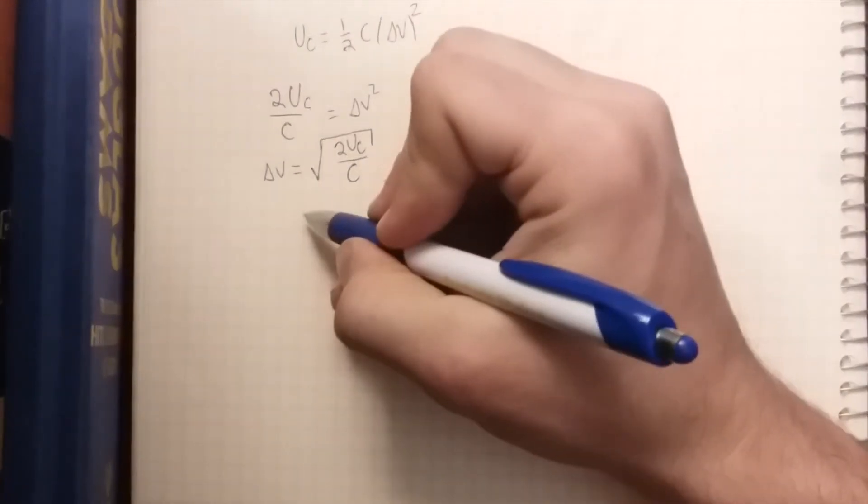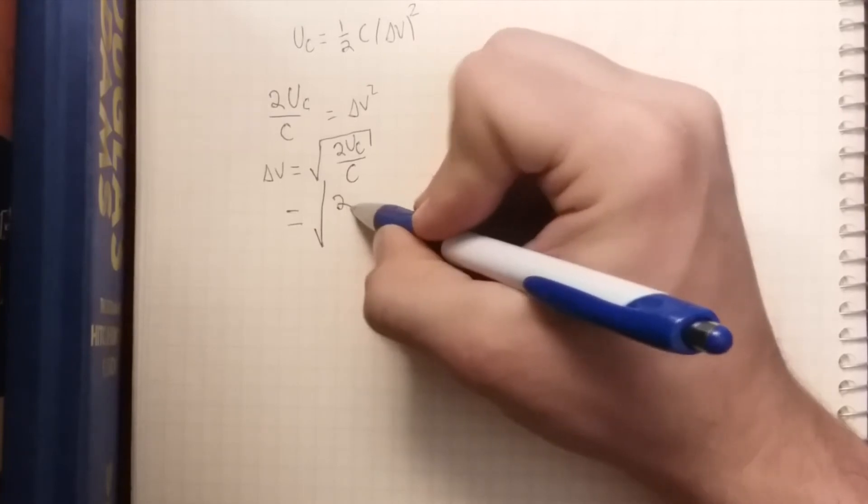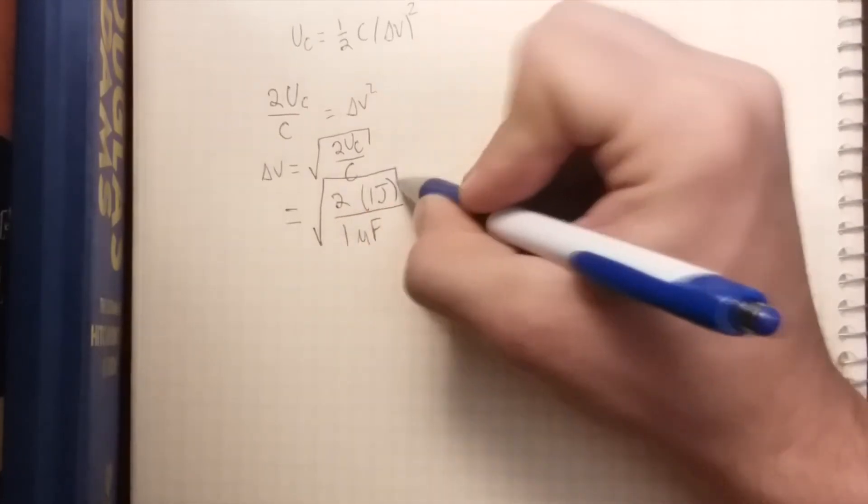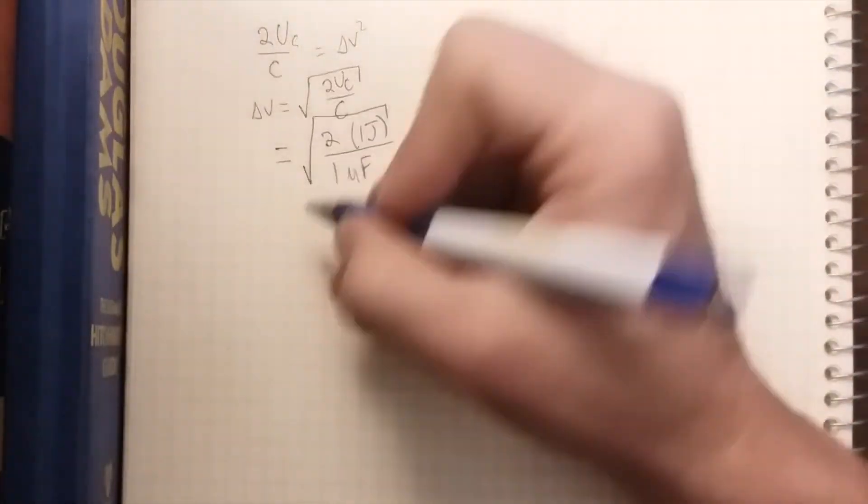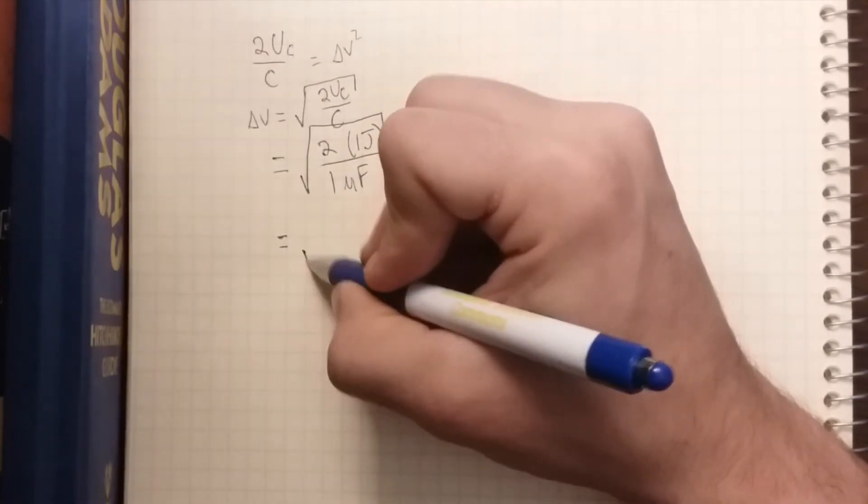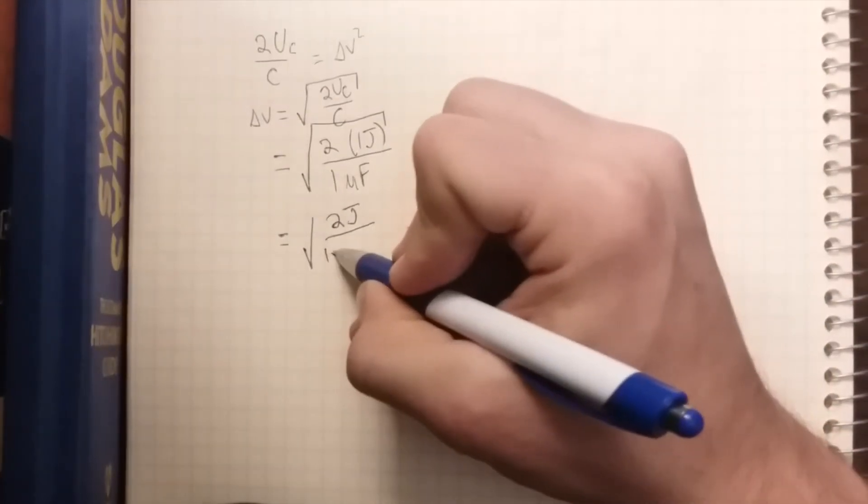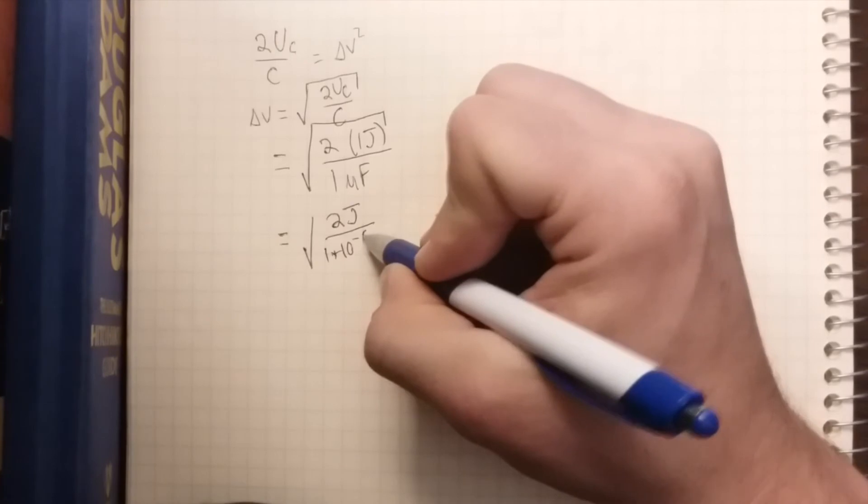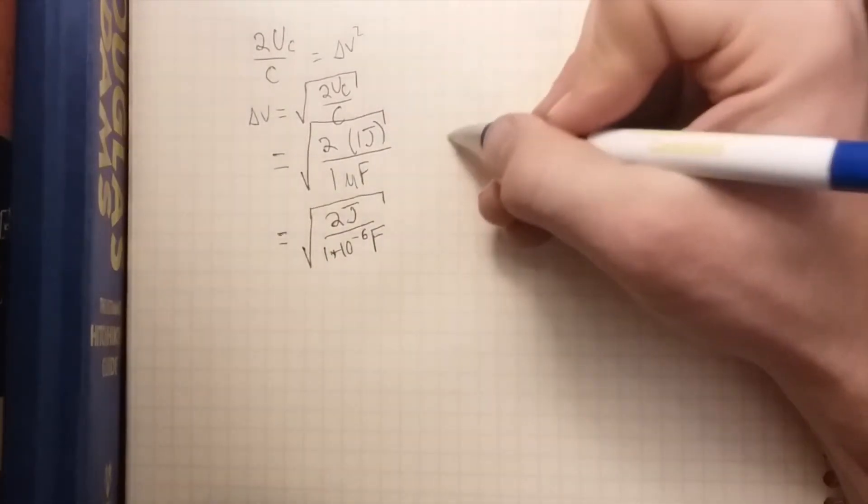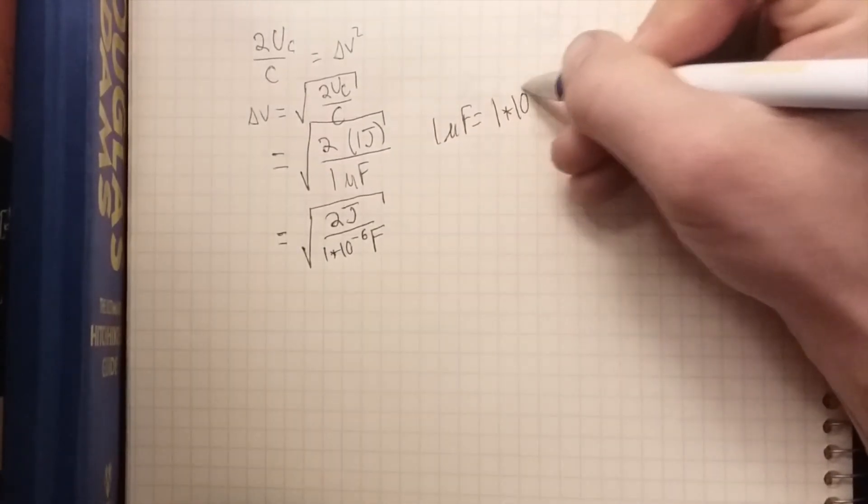Okay, so now we can plug in numbers. This equals root 2 times 1 joule over 1 microfarad, which is 1 times 10 to the minus 6 farads. We need to remember to convert our units. So 1 microfarad equals 1 times 10 to the minus 6 farads.